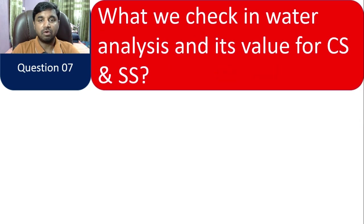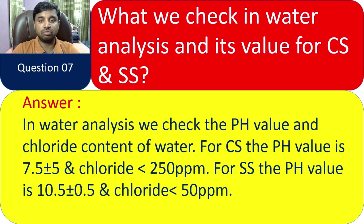Question 7: What do we check in water analysis and its values for CS and SS? In water analysis, we check the pH value and the chloride content of the water. For CS (carbon steel), the pH value is 7.5 ± 0.5 and chloride is less than 250 ppm. For SS (stainless steel), the pH value is 10.5 ± 0.5 and chloride is less than 50 ppm. This is a very important value to remember.